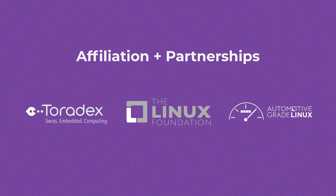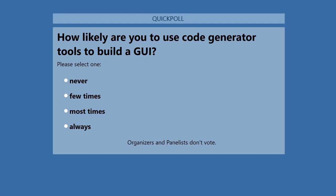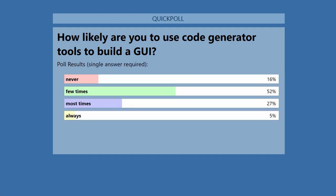We are going to have a few polls during this presentation to learn more about our audience. The question is: how likely are you to use a code generator tool to build a GUI? Options are: never, a few times, most of the time, or always. The most voted responses were 'a few times' followed by 'most of the time.' This is really interesting because today we are going to show a tool to help you build GUI in an easy and fast way with automation.